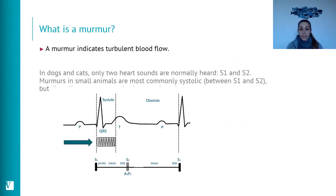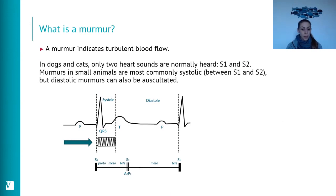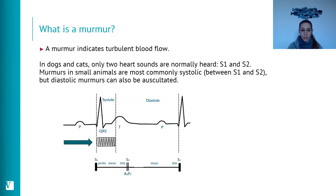Dogs and cats normally have two heart sounds that we auscultate: S1 and S2. Murmurs tend to occur mostly during systole — so between S1 and S2 — and here you can see a diagram depicting one systolic murmur.